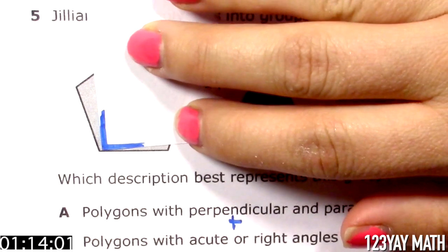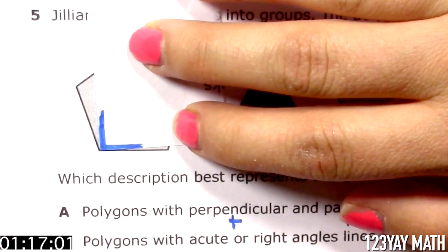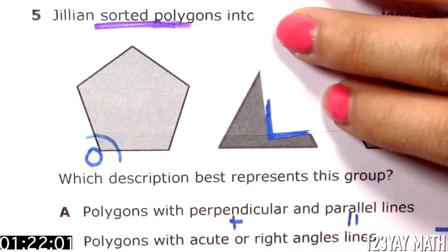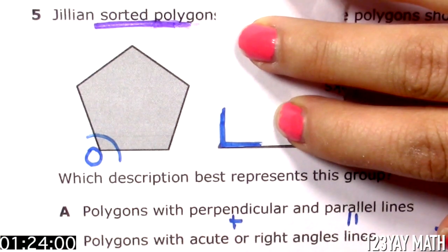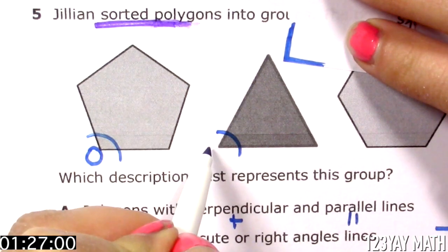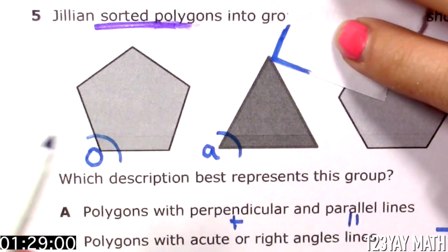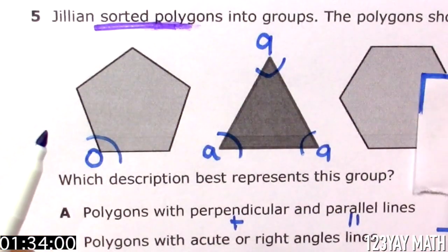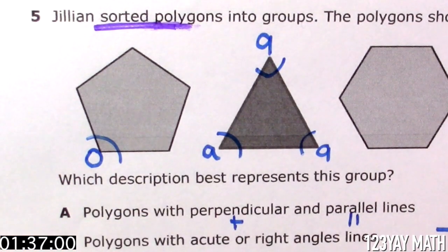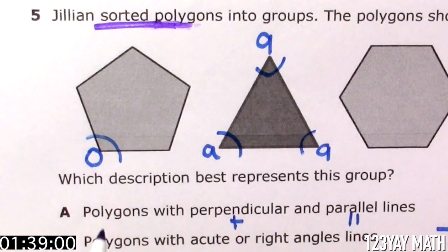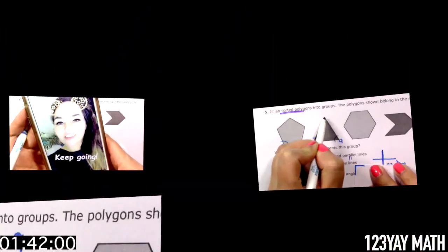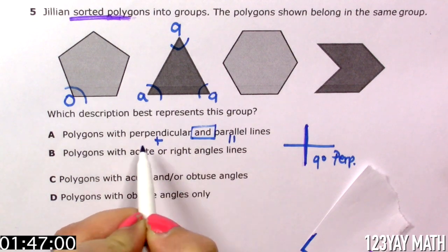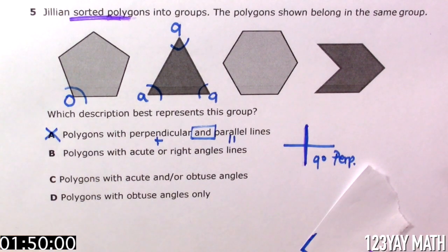First angle. Is this a perpendicular line? Definitely not because this is an obtuse angle. Is this a perpendicular line? No. This is an acute angle, less than 90 degrees. And this is acute, acute. So this shape does not have any perpendicular lines. Can this be the answer? That's not it. Keep going. Definitely not because here it says and parallel lines. So A is not it.